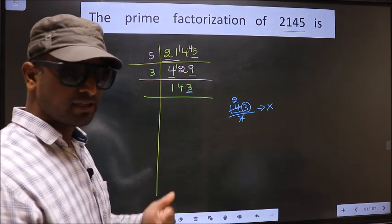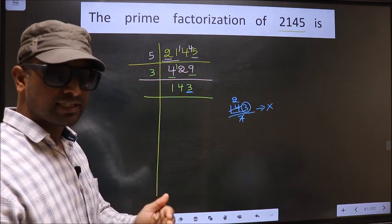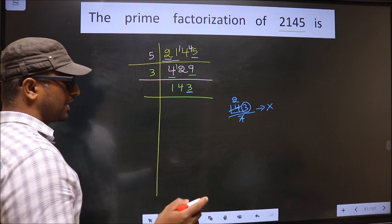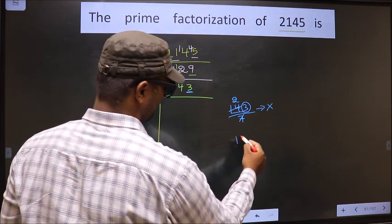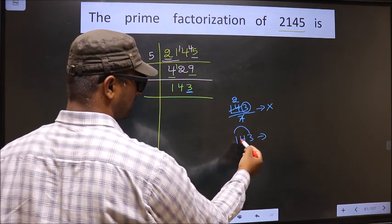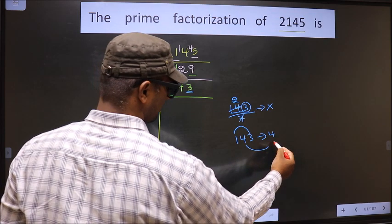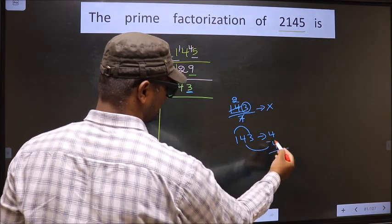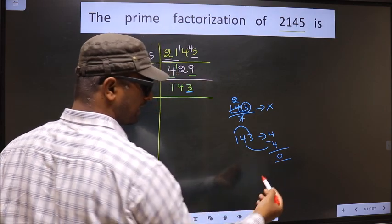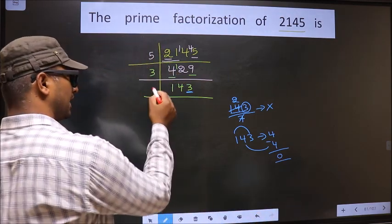Next, prime number 11. To check divisibility by 11, we take the difference of the sum of alternate numbers. We have 143. We add alternate numbers: that is 1 plus 3 = 4. The middle digit 4 is left. You subtract: 4 minus 4 = 0. 0 is divisible by 11, so this number is also divisible by 11. So we take 11 here.